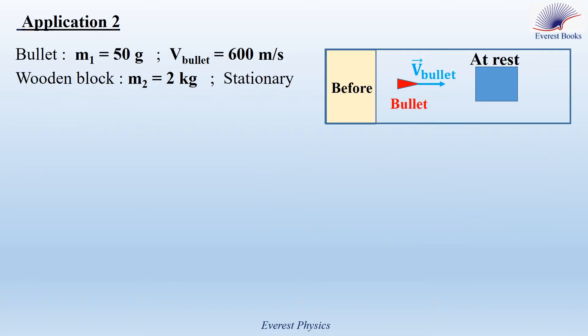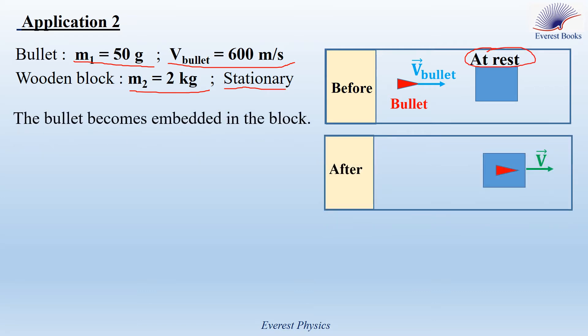Application 2. A bullet of mass M1 equals 50 g, moving horizontally at a speed of V bullet equals 600 m per second, strikes a stationary wooden block of mass M2 equals 2 kg, resting on a smooth horizontal surface. Stationary block means it is initially at rest. The bullet becomes embedded in the block.